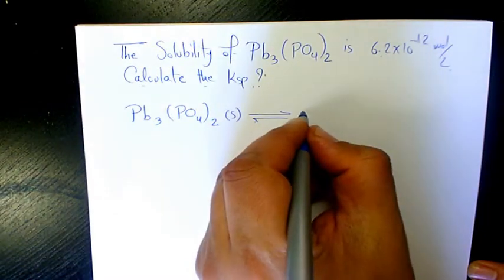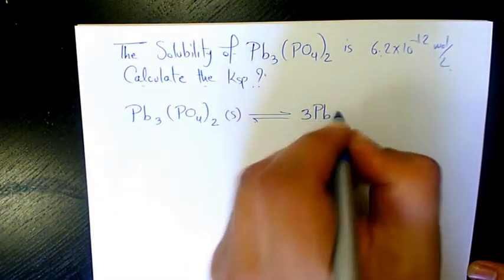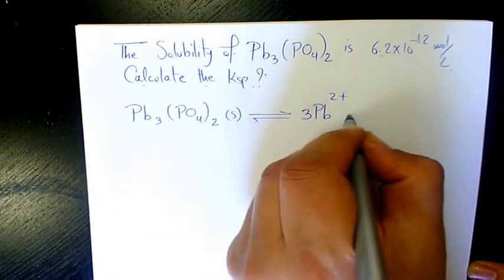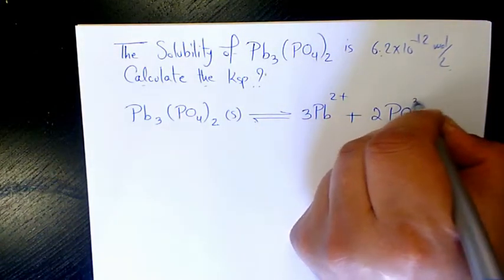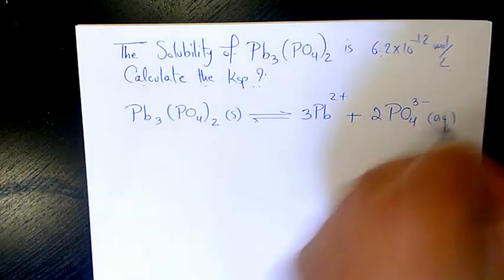is going to produce 3 Pb2+ plus 2 PO4^3-, both in aqueous phase.